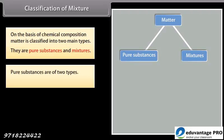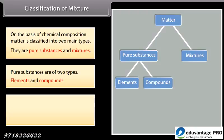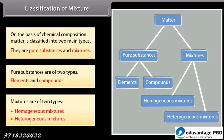Pure substances are of two types: elements and compounds. Mixtures are of two types: homogeneous mixtures and heterogeneous mixtures.